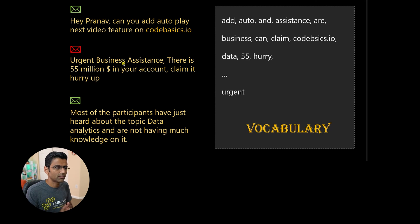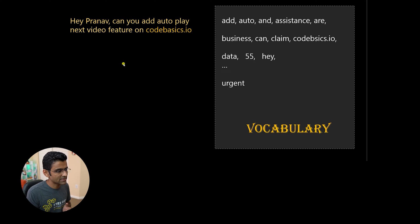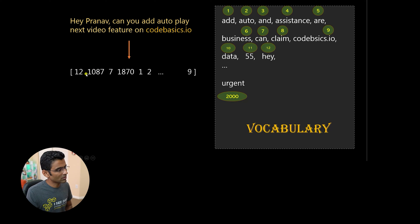And let's say I assign numbers to these words. Let's say I sort them alphabetically and I assign these numbers. So number for add is one, auto is two and so on. And then when you take any email, you're just doing a simple lookup. So let's say the number for hey is 12.